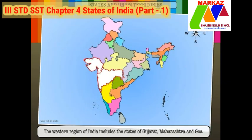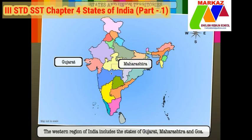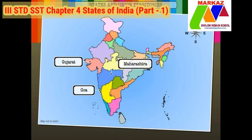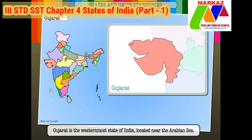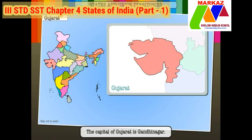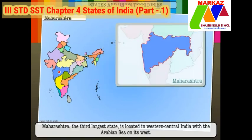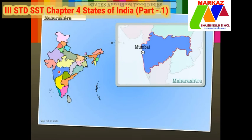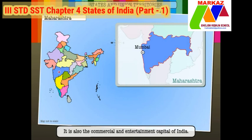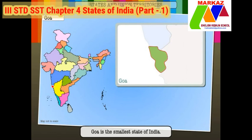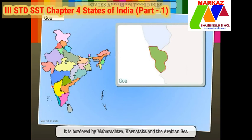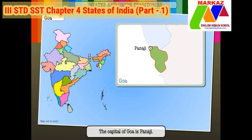The western region of India includes the states of Gujarat, Maharashtra and Goa. Gujarat is the westernmost state of India, located near the Arabian Sea; its capital is Gandhinagar. Maharashtra, the third largest state, is located in western central India with the Arabian Sea on its west; its capital is Mumbai. It is also the commercial and entertainment capital of India. Goa is the smallest state of India, bordered by Maharashtra, Karnataka and the Arabian Sea. The capital of Goa is Panaji.